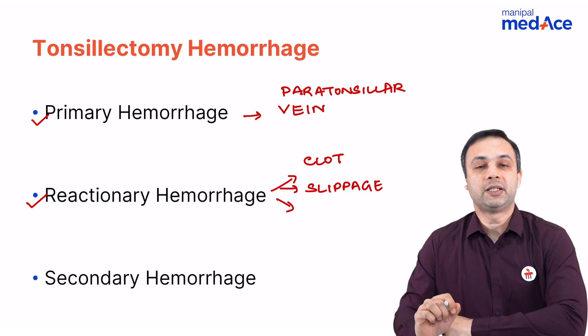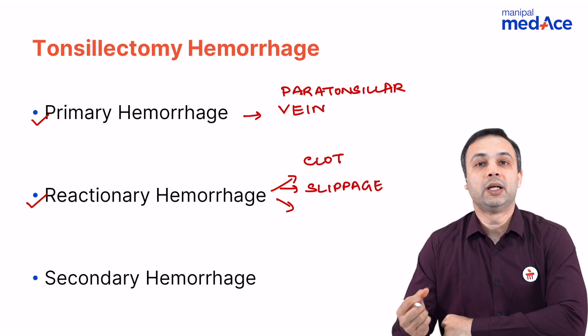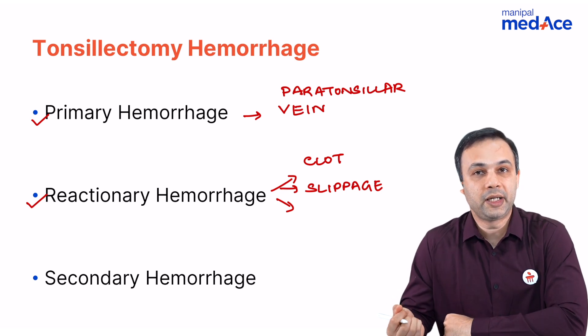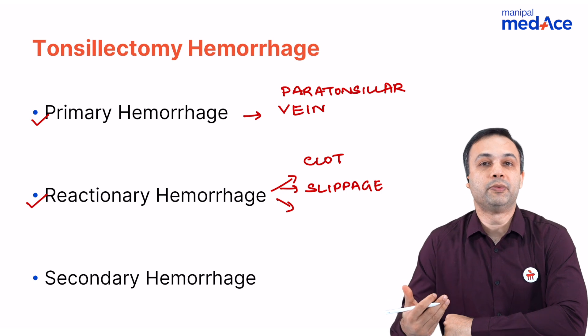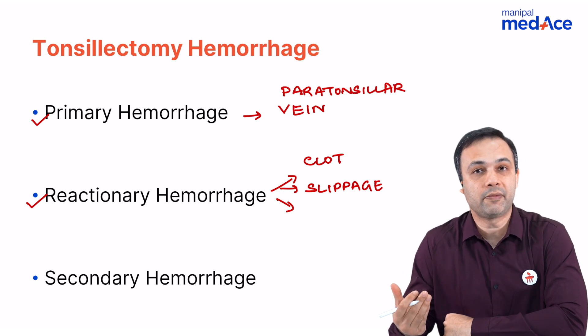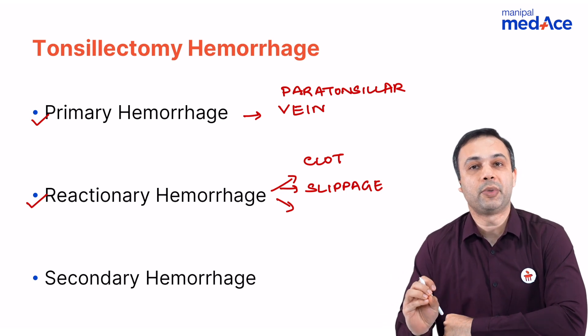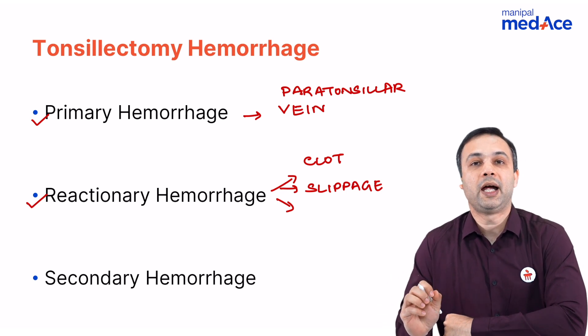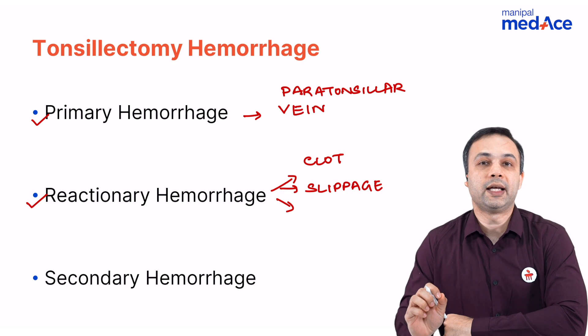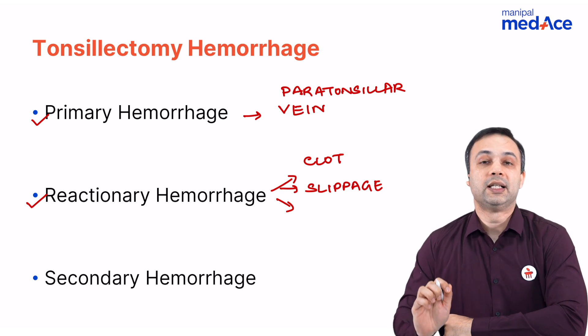What do you do in cases of a reactionary hemorrhage? We need to ligate the bleeder. Before that, we have to secure the airway, shift the patient to the operative room, and either ligate or cauterize the bleeder.